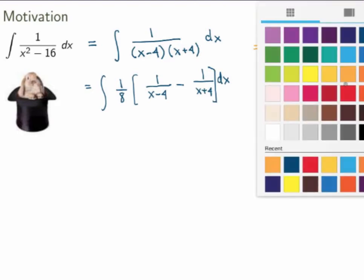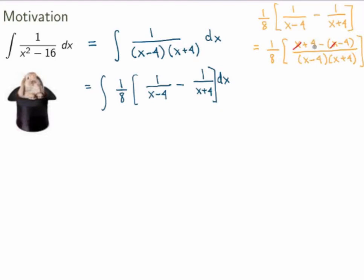And that's where the magic is. X's cancel out. 4 minus minus 4, that's 4 plus 4, 8 cancels with the 8. And I end up with 1 over x minus 4 times x plus 4, which is indeed what I started with. Great! So this is exactly equal to this.